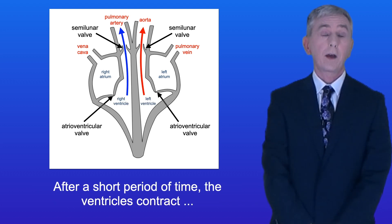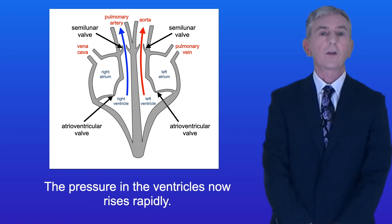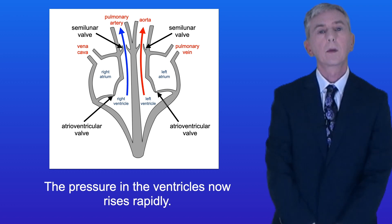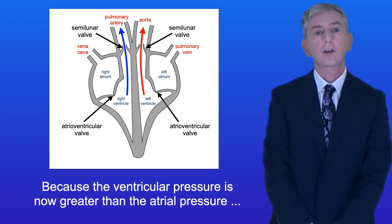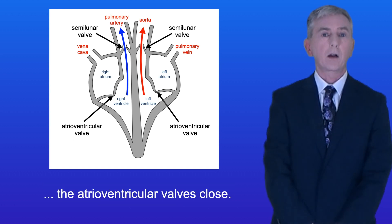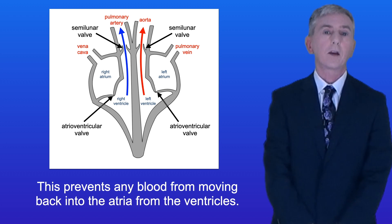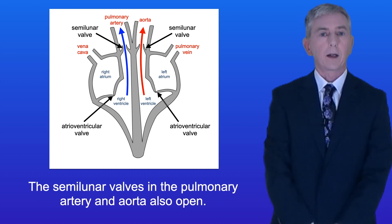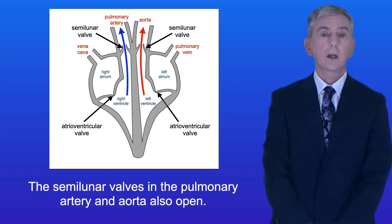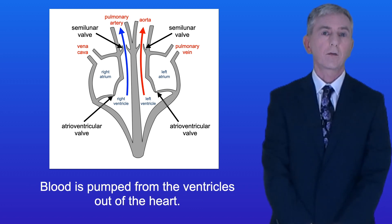After a short period of time the ventricles contract, in other words they enter ventricular systole. The pressure in the ventricles now rises rapidly. Because the ventricular pressure is now greater than the atrial pressure, the atrioventricular valves close, and this prevents any blood from moving back into the atria from the ventricles. The semilunar valves in the pulmonary artery and aorta also open, and blood is pumped from the ventricles out of the heart.